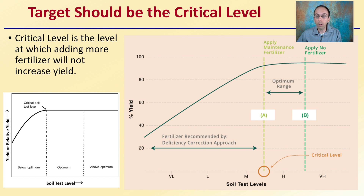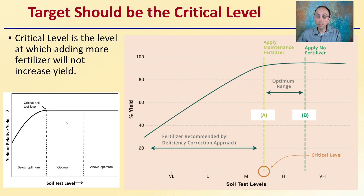The target should be the critical level. You might hear growers talk about the critical level — this is the level at which adding more fertilizer will not increase yield. Once you've crossed that soil test value going above it, you're not going to get any more yield. The optimum range is a range, not a number; the critical level is more so a number. The optimum range will be a little bit above that critical level, and overshooting slightly is fine, but getting above optimal means you've overshot too far. Getting into excessive levels could lead to toxicity.